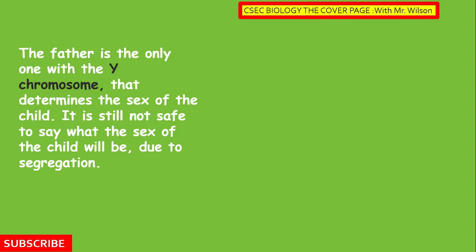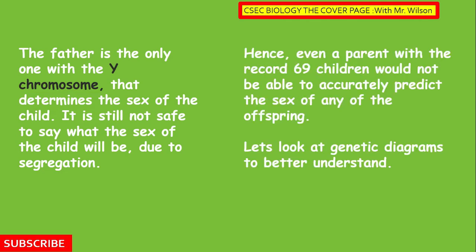It is still not safe to say what the sex of a child will be due to segregation. Hence, even a parent with the record of 69 children would not be able to accurately predict the sex of any of the offspring. Let's use genetic diagrams to help you better understand.